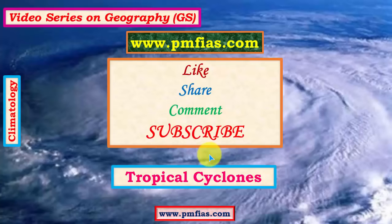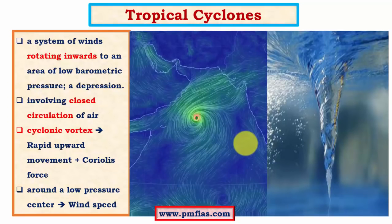A tropical cyclone is an intense low pressure center associated with convergence of air, and the wind movement occurs at very great velocities. A tropical cyclone starts as a low pressure center, develops into a depression, then a deep depression, then a cyclonic storm, a severe cyclonic storm, a very severe cyclonic storm, and finally a super cyclone. In a super cyclone the maximum sustained wind velocity is about 200+ kilometers per hour.